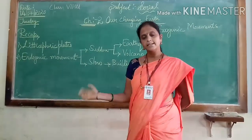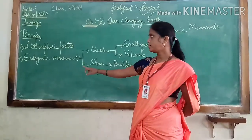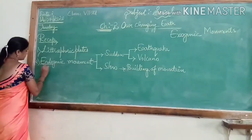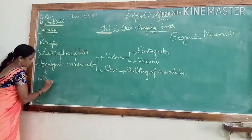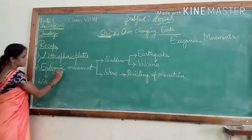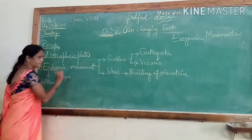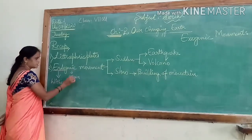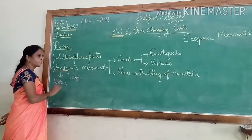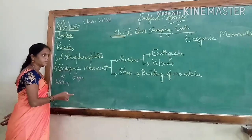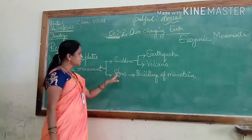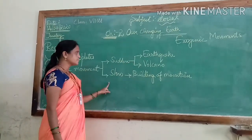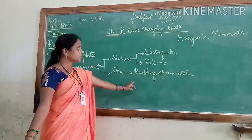Due to lithospheric plate movement, there are two types of movements which take place inside and outside of the earth. First, endogenic movements. Endogenic is composed of two words: 'endo', which means within the earth, and 'genic', meaning origin — from where the force started to act. So endogenic means the movement which takes place inside the earth. There are two types of endogenic movements: one is sudden and one is slow. Slow forces cause the building of mountains.